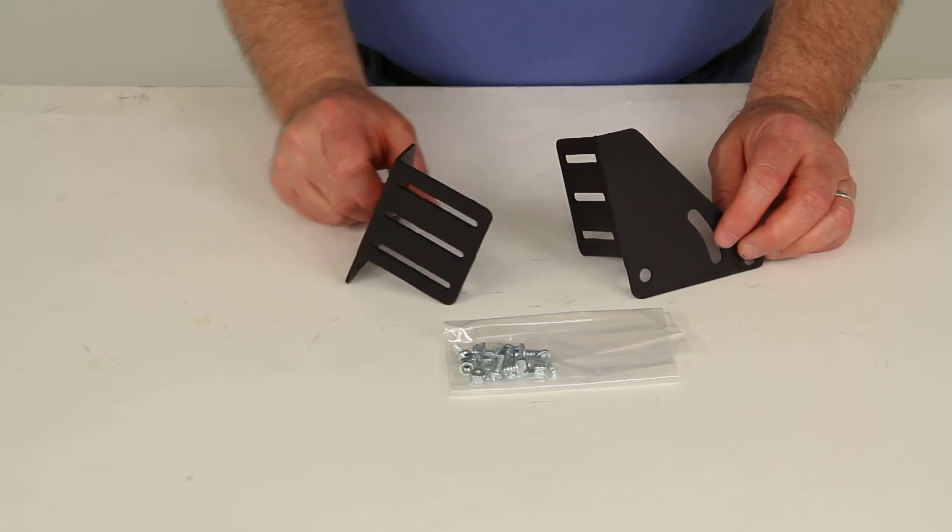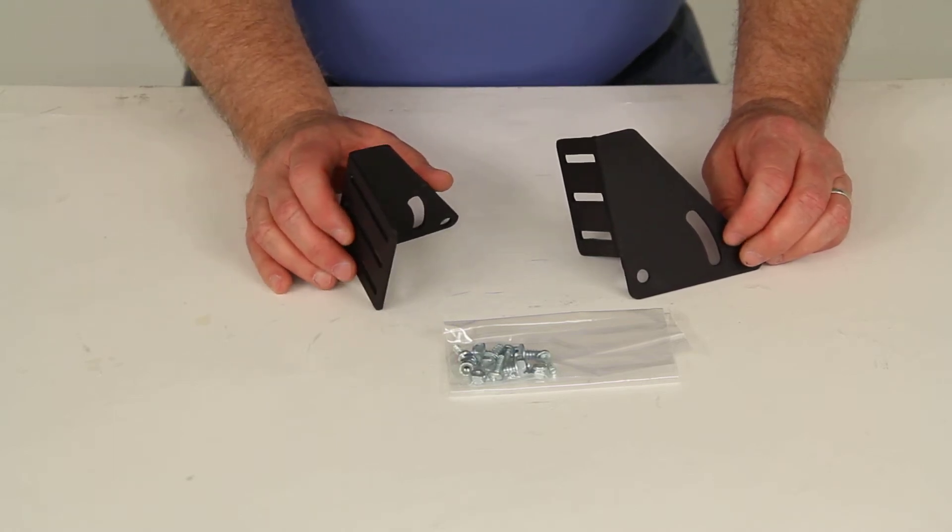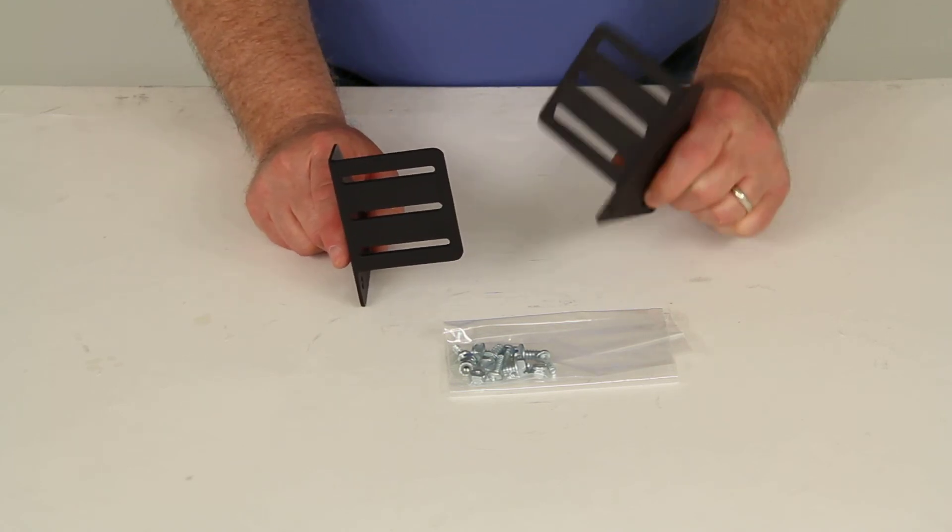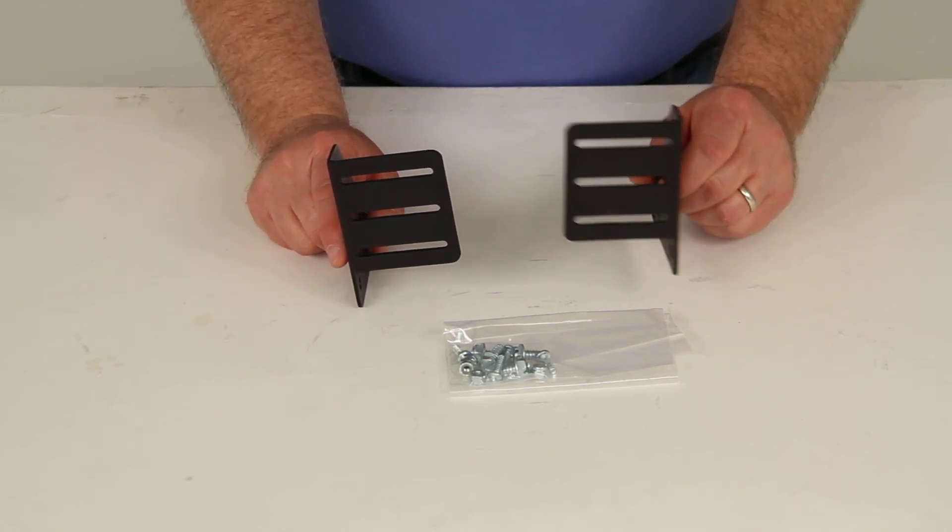That should do it for review on part number WM6700BK. These are the fifth wheel pin box mounting brackets for the Wheelmasters Levelmaster Trailer Bubble Level.